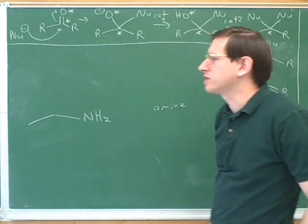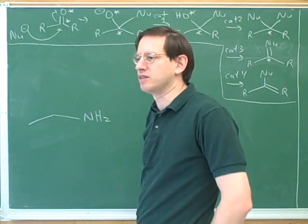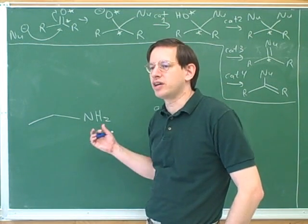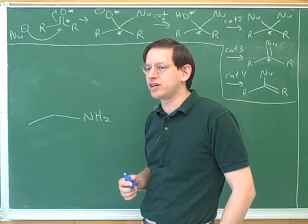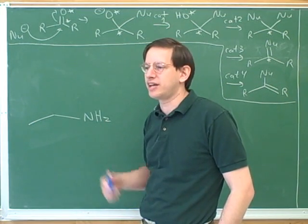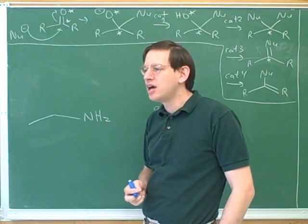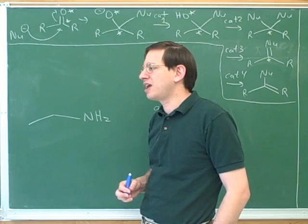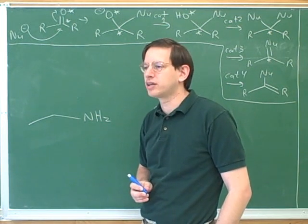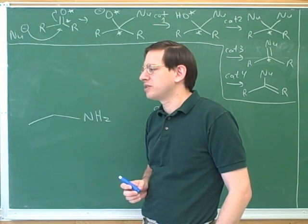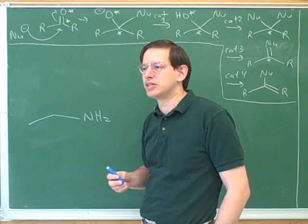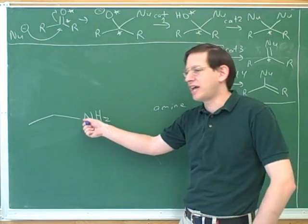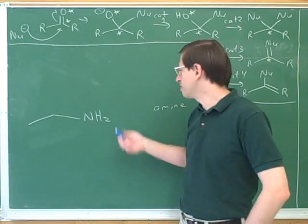Now, remember that when we talked about carbons, we talked about primary, secondary, and tertiary carbons. Well, it's important to use similar terminology for amines. Remember, a primary carbon is attached to one other carbon chain, a secondary carbon is attached to two other carbon chains, and a tertiary carbon is attached to three other carbon chains. Similarly for amines, a primary amine is when the nitrogen is attached to one carbon chain, a secondary amine is when the nitrogen is attached to two carbon chains, a tertiary amine is when the nitrogen is attached to three carbon chains.